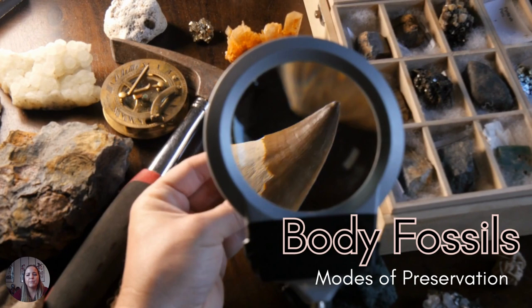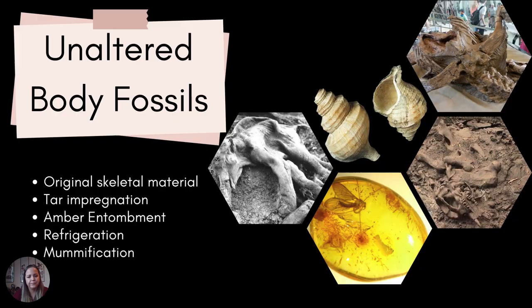With body fossils, we need to look at the mode of preservation — how are they preserved? Depending on whether they were altered or unaltered, we're going to see different types of preservation. With unaltered body fossils, these can come in the form of original skeletal material, tar impregnation, amber entombment, refrigeration, and mummification. We'll go through each of those individually.